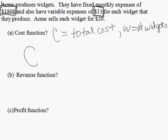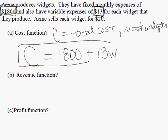So in this case, total cost C is $1,800 to start, plus $13 for each widget they make. So we would take 13 times the number of widgets that they make. There's our cost function.